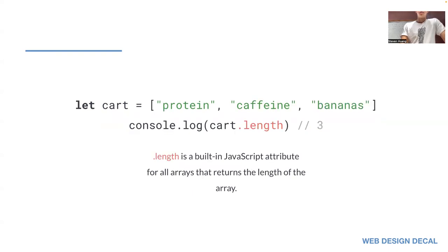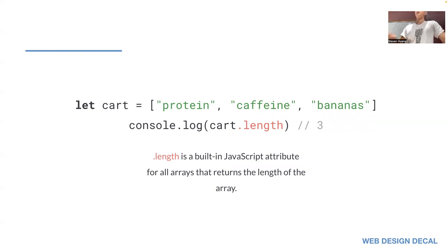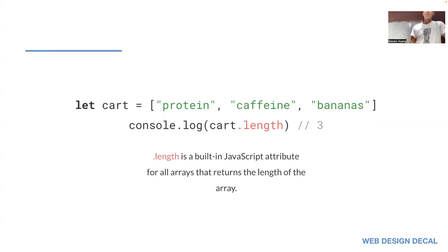The length property is part of all arrays. It's a property, not a function, so to access it you do dot length instead of dot length with parentheses. This returns the length of the array — since there are three items in the cart, it'll console.log 3. This will be useful when you want to loop through something, which we'll get into later.